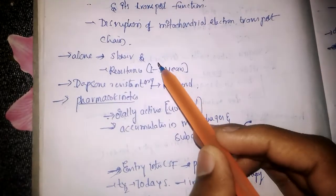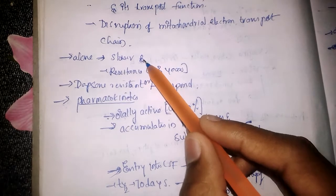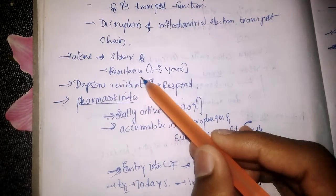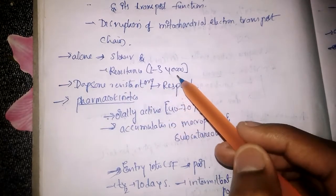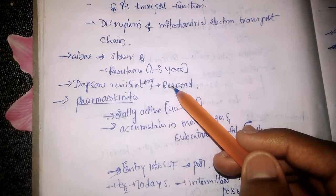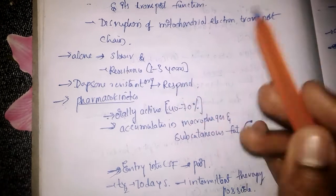If you give Clofazimine alone, the response will be very slow. Additionally, resistance can develop within one to three years when given alone.